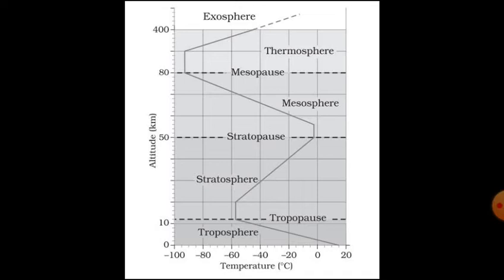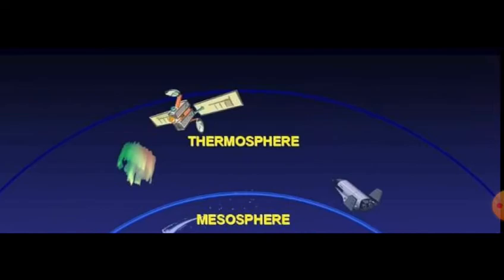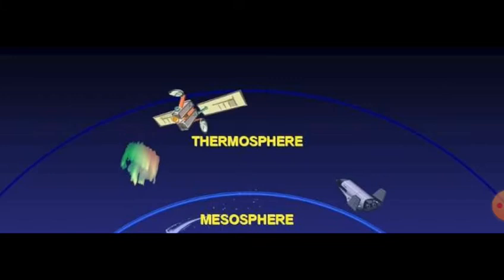The temperature increase is caused by the absorption of energetic ultraviolet and x-ray radiation from the Sun. The thermosphere is more like outer space than a part of the atmosphere. Many satellites actually orbit Earth within the thermosphere.